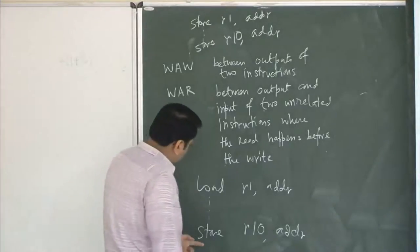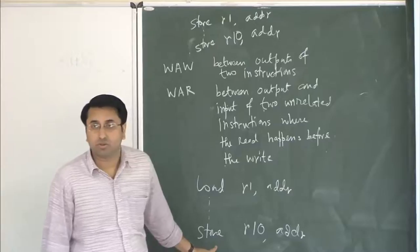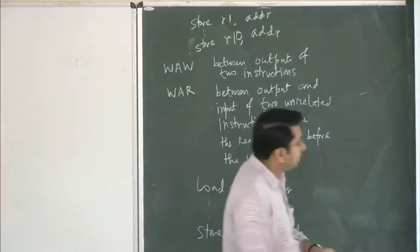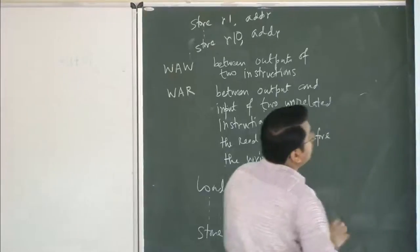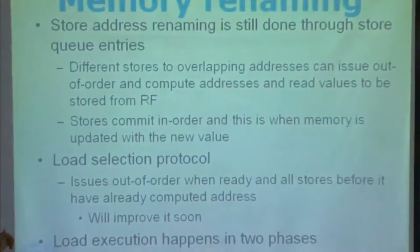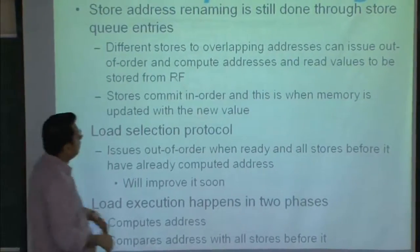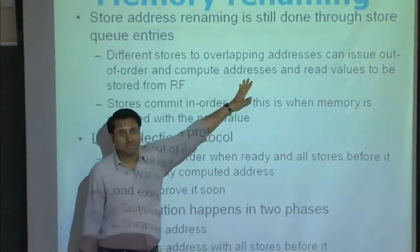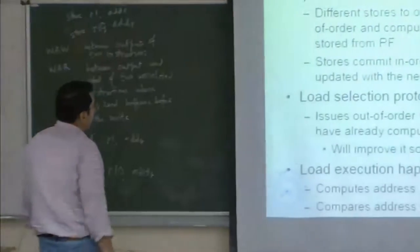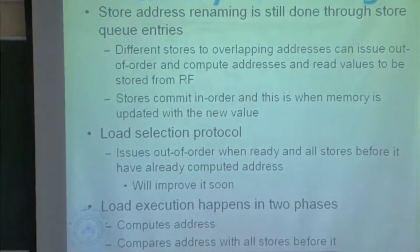Similarly, we can issue a store ignoring a preceding load and put the value in the store queue entry. What we achieve is the ability to overlap address computation of these instructions. We can run them concurrently if we have enough resources, compute addresses out of order, and read the register file out of order to put values in the store queue entry. Memory update will still happen in order. Stores complete in order — that is when memory is updated. Memory update is still in order; that has to be kept in mind.